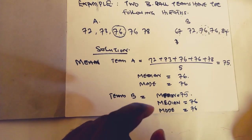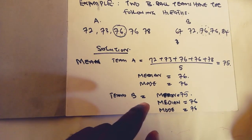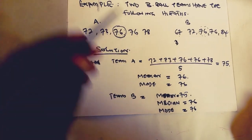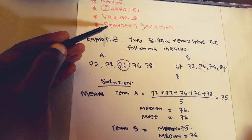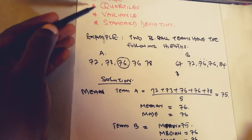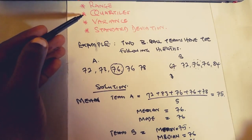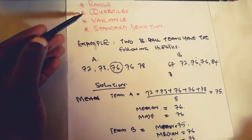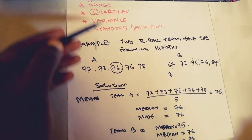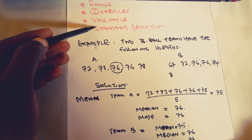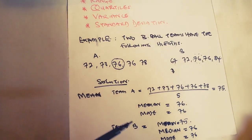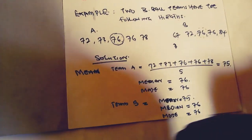But let us see what measures of variation will tell us about these two teams. In the next lesson we will look at measures of variation beginning from the range, the variance, and the standard deviation, and we'll come back to interquartile ranges and quartiles after that.